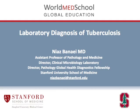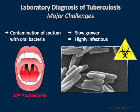Laboratory diagnosis of pulmonary tuberculosis by conventional methods is one of the most challenging things the laboratory has to do, for three reasons. First, the sputum sample has to be collected through the oral cavity, which gets contaminated with oral bacteria, and therefore the sample has to be decontaminated.